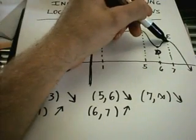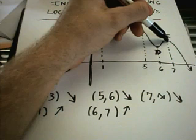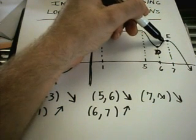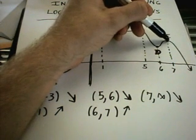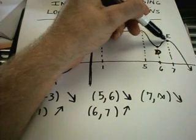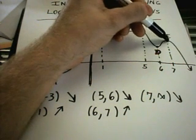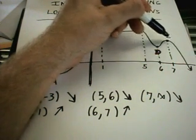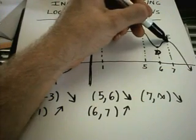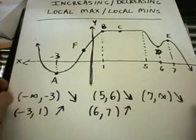Likewise, you have a local maximum if that height is greater than or equal to what's around it. As you move immediately to the left, you start going down the hill. As you move immediately to the right, you're going down the hill. This would be considered a local maximum.